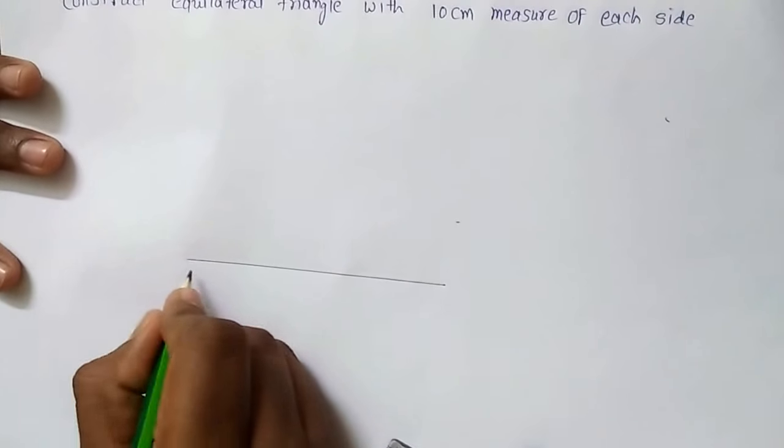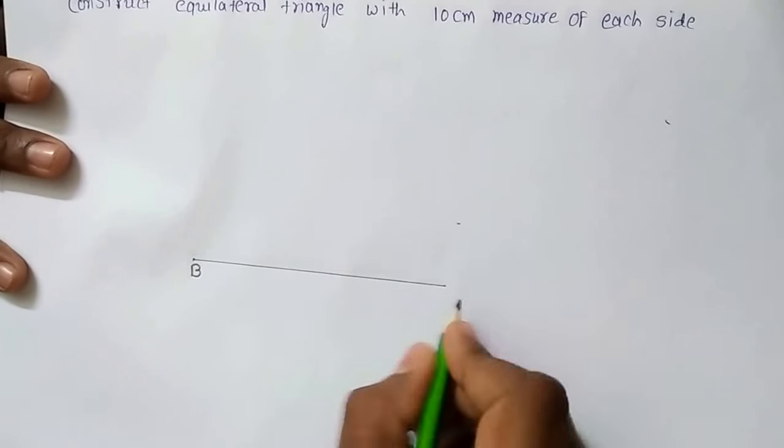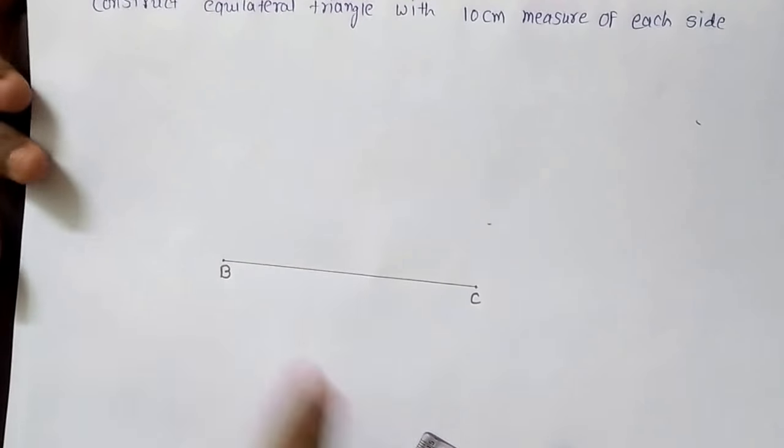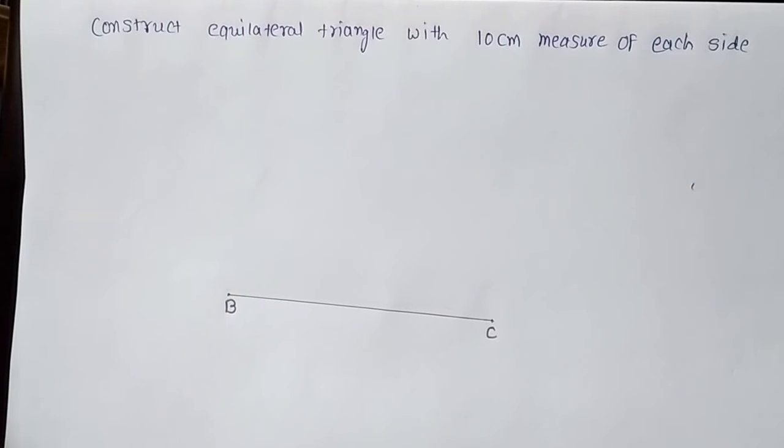Let me say if I will take triangle ABC. Then this line segment will take it to be line segment BC. Now I have to take this measure of side AB and AC will be of 10 cm.